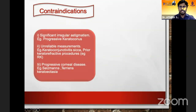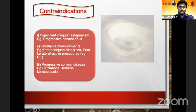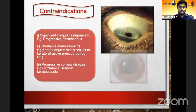Contraindications include patients with irregular corneal astigmatism or patients where the astigmatism is not stable. Unreliable measurements due to dry eye and keratoconus are relative contraindications, but we can still consider toric lenses with caution in those cases.